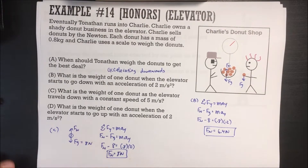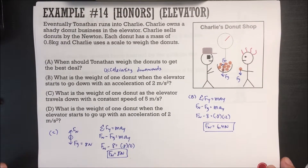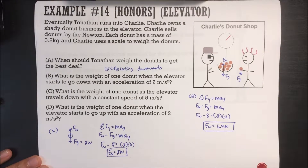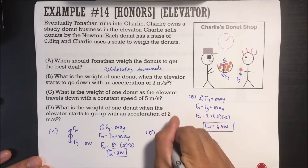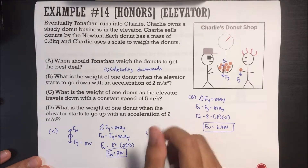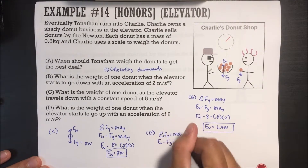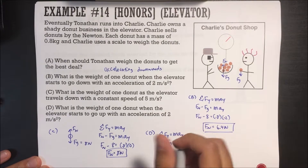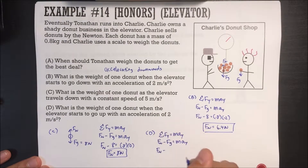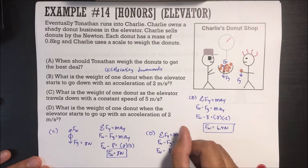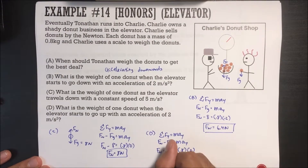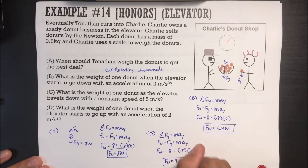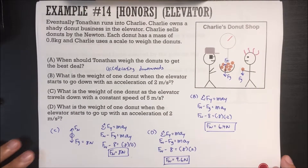Part D: what is the weight of one donut when the elevator starts to go up with an acceleration of 2 meters per second squared? Sum of all forces in Y equals mass times acceleration in Y. Force normal minus force of gravity equals mass times acceleration in Y. Force of gravity is 8 N, mass is 0.8, acceleration is positive 2 m/s². The normal force is 9.6 newtons. So don't buy donuts when the elevator is accelerating upwards.